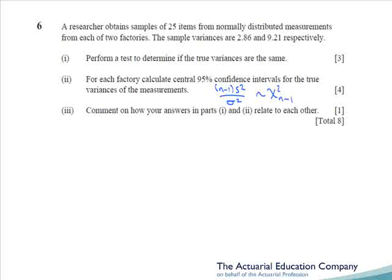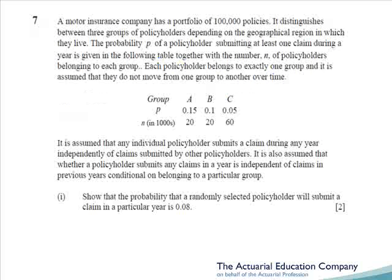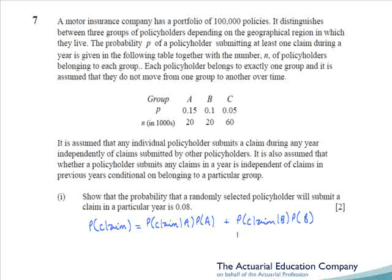On to question seven, which frankly probably was the most tricky one on the paper, and asks us about probabilities. This requires quite a bit of thinking, and in the exam, had you panicked on this question, you'd probably have been wise to shove on and get your marks elsewhere. There are three groups of policyholders: A, B, and C. We're given the probability for each group of submitting at least one claim, and also how many policyholders are in each group. In part one, we're asked to show that the probability that a randomly selected policyholder will submit a claim is 0.08, essentially using the law of total probability from chapter two.